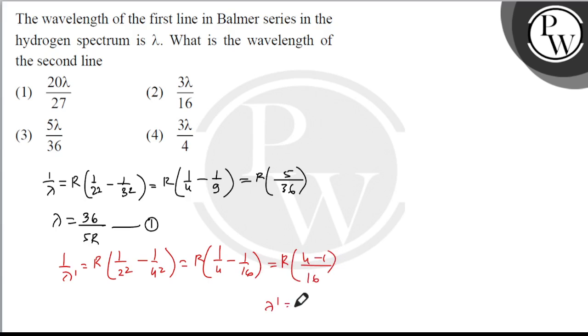Lambda dash is 16 by 3R. Now lambda dash upon lambda ki value will be 16 by 3R divided by 36 upon 5R, which is equal to 16 by 3R multiplied by 5R upon 36.